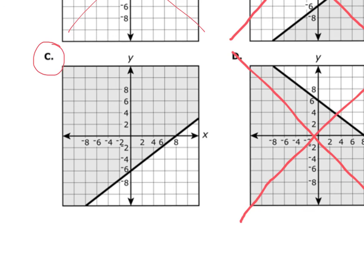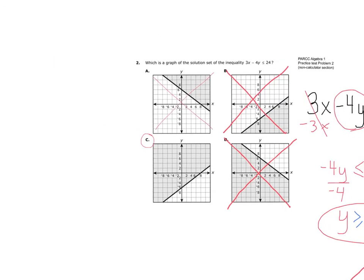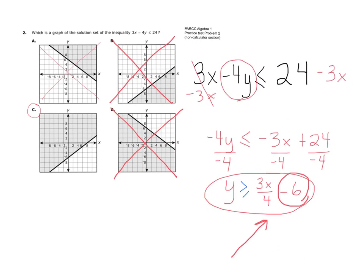Okay? It represents the equation. The original equation, 3x minus 4y is less than or equal to 24, which we converted into slope-intercept form so that we could tell which graph was the correct graph.